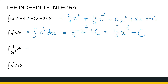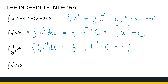For the next one, rewrite it: we have a constant 1 over 5 and t to the power minus 3. The constant just tags along. Adding 1 to minus 3 gives minus 2, so the integral is 1 over 5 times 1 over minus 2 times t to the power minus 2 plus c. That simplifies to minus 1 over 10 t to the power minus 2 plus c. You can verify by differentiating: minus 1 over 10 times minus 2 gives 1 over 5, reduce the exponent by 1, and you get back what you started with.